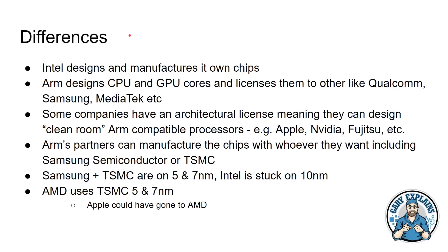Now let's look at some of the differences between these two architectures and the companies behind them. One big thing is that Intel designs and manufactures its own chips — it has engineers for micro-architecture design and large parts of Intel dedicated to the manufacturing process. Some people even say it thinks it's a manufacturing company first and a design company second. Whereas ARM designs CPU and GPU cores, doesn't make chips itself, and licenses them to companies like Qualcomm, Samsung, and MediaTek, who in turn manufacture those chips with Samsung Semiconductor or TSMC.